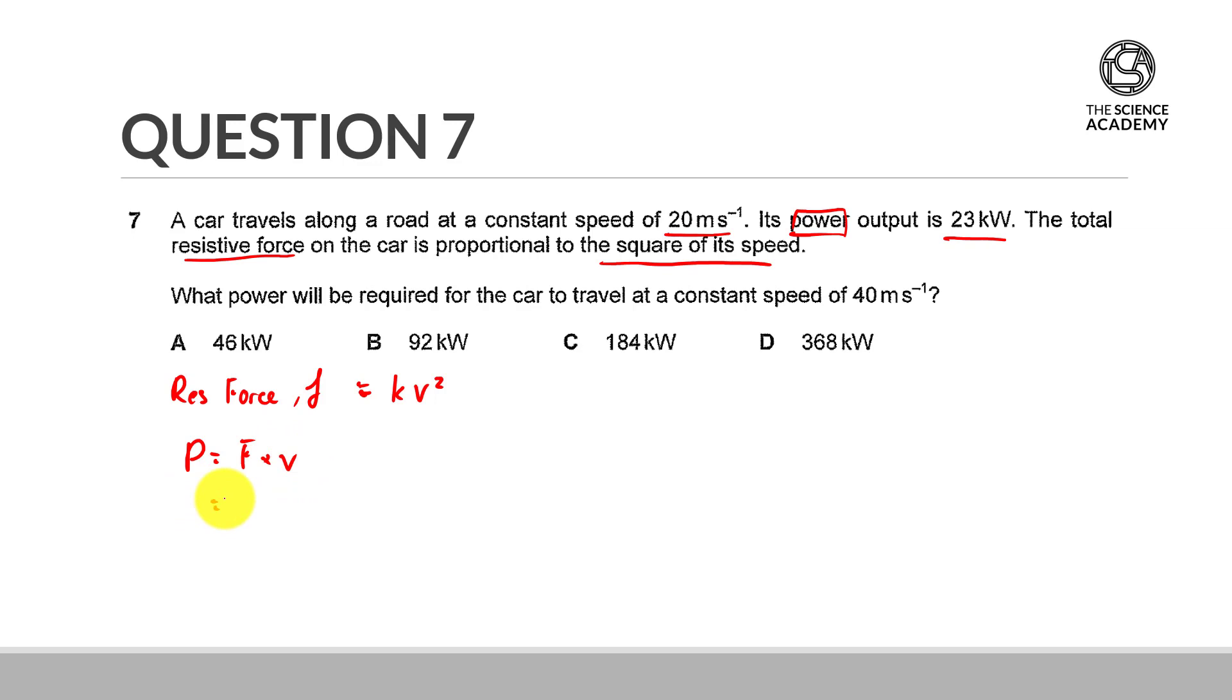So we are told that in this case, because we have 23 kilowatts and the frictional force is going to be kv squared, we multiply in another V, we have kv cubed, and at a power of 23 kilowatts, the speed was 20 meters per second.